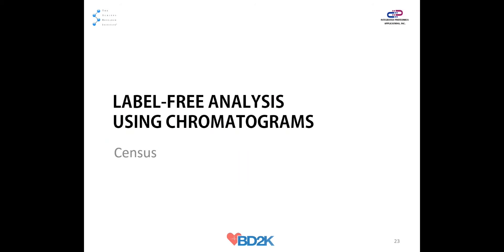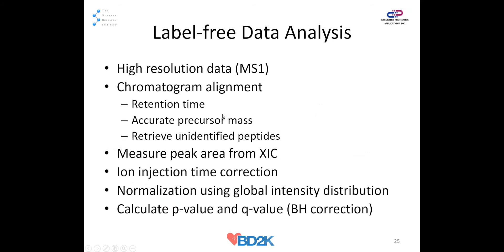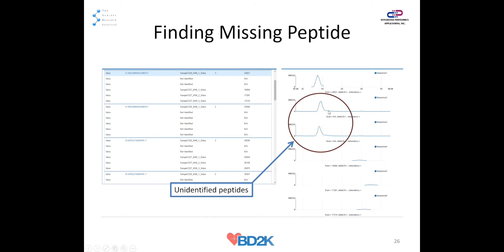Label-free analysis is the next topic. In label-free, you have replicates and instead of labeling, individual experiments are run separately. You calculate the extracted ion chromatogram and then perform statistical analysis — p-value or q-value. We do chromatogram alignment using retention time and accurate mass to retrieve unidentified peptides, pick the peak area under the curve, apply ion injection time correction, and perform normalization. As you can see, missing values can be retrieved.